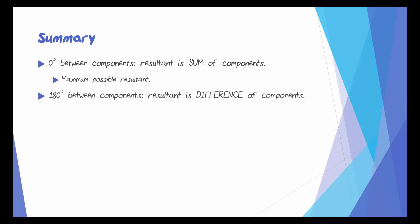When there's 180 degrees between the components, the resultant is the difference of the components, and this is the minimum possible resultant.